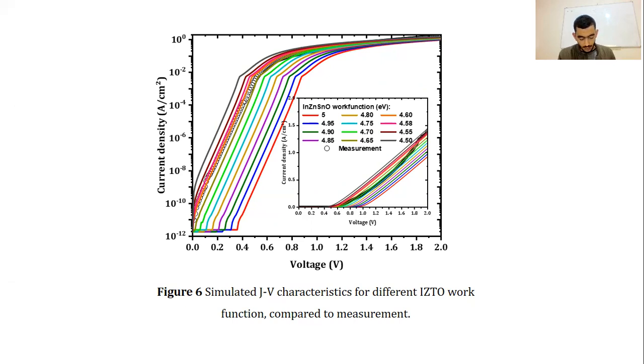A good agreement between simulation and measurement is achieved for work function 4.6 electron volt. The small deviation from measurements in the domain from 0.4 to 0.8 volt region is due to the effect of interfacial states.